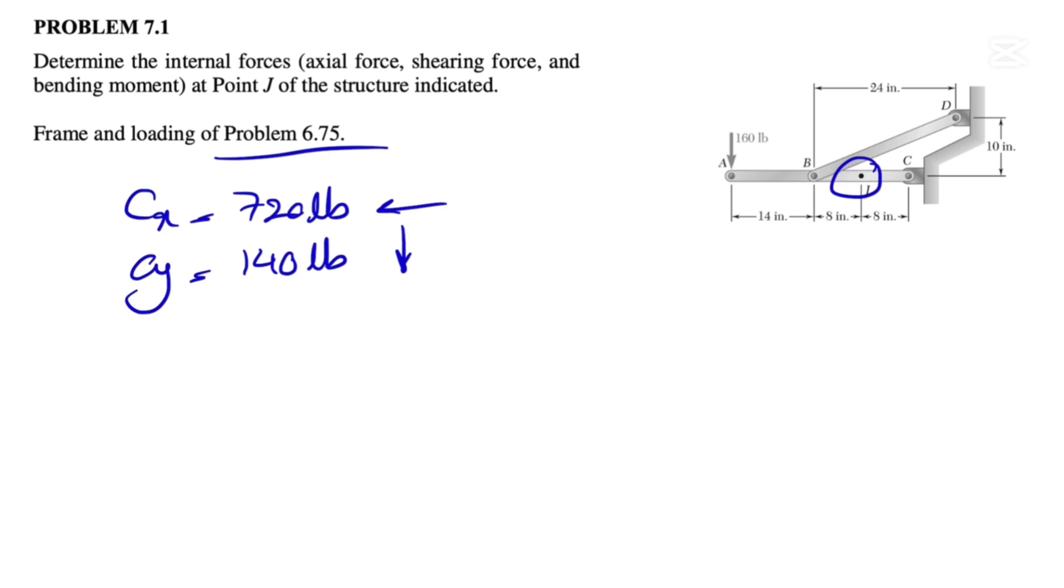So we're interested at point J. We're going to pick this part of the member in order to figure out all the unknowns that we have. So I'm going to draw the free body diagram for that section that we have.